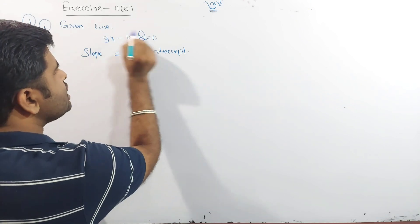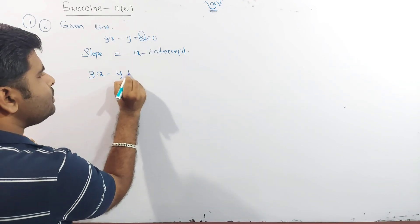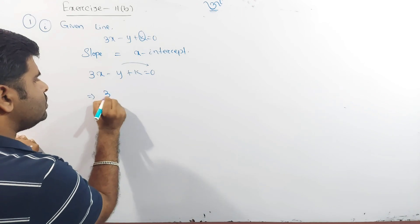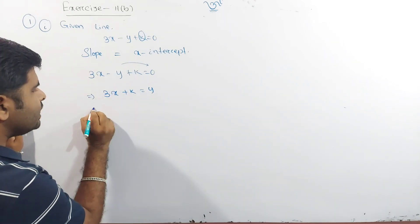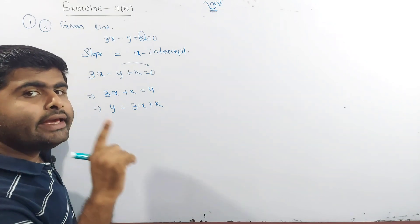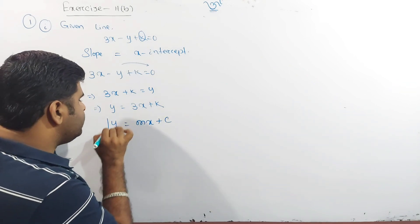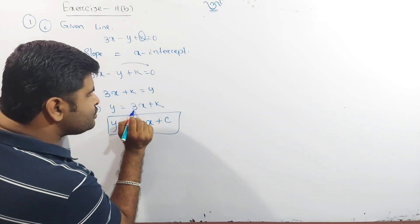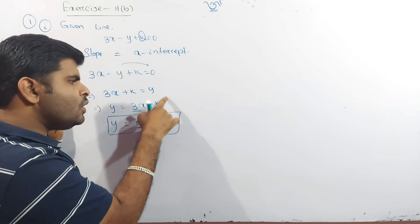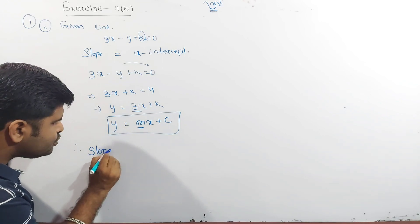First, we have to take the equation 3x minus y plus k equal to 0, and write it as y equal to 3x plus k. We have to take the equation of the straight line in slope-intercept form: y equal to mx plus c. So slope m is equal to 3.